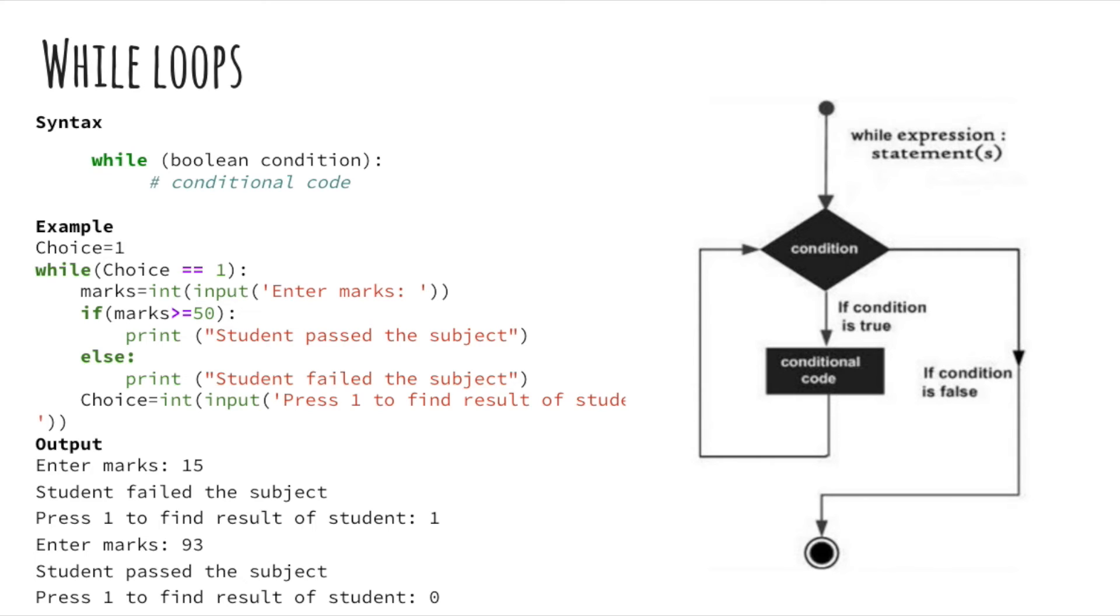One thing you should know about Python is that it handles blocks of code differently from Java, C++, or JavaScript. Instead of wrapping curly brackets around the code you want to include in a loop, all statements with the same level of indent are considered to be part of a single block of code. Indentation is very important.